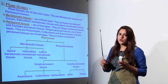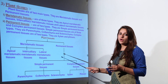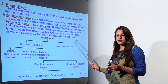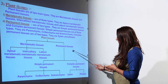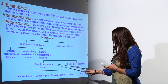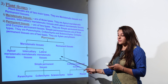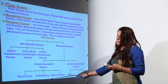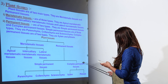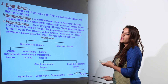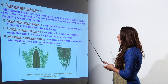Permanent tissue has actually lost its ability to divide — it has committed to performing a specific function throughout the life of the plant. It consists of dead cells which have lost their ability to divide. Permanent tissue is further divided into simple permanent tissue and complex permanent tissue. Simple permanent tissue includes parenchyma, colenchyma, and sclerenchyma, while complex permanent tissue includes xylem and phloem, the conducting tissues of the plant.